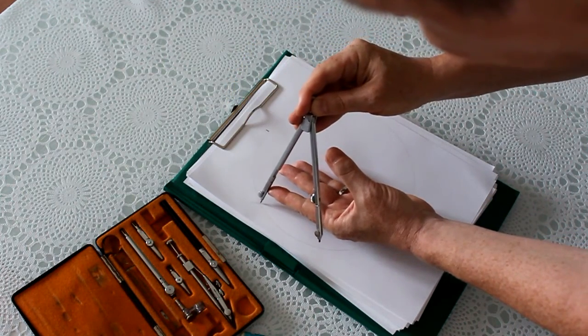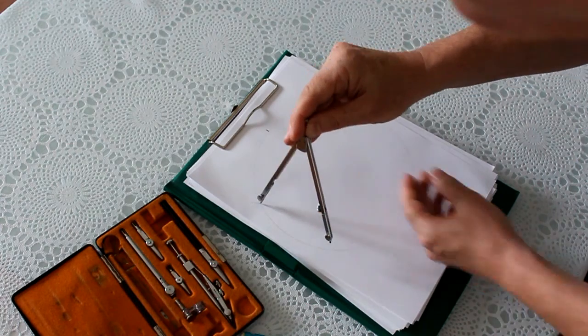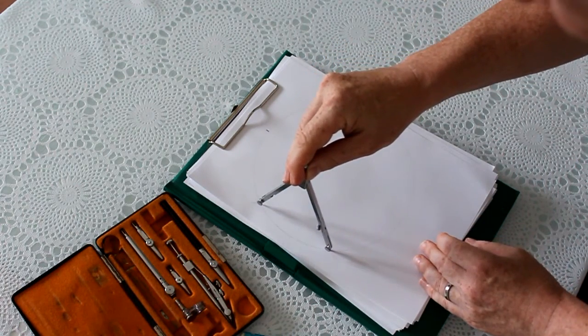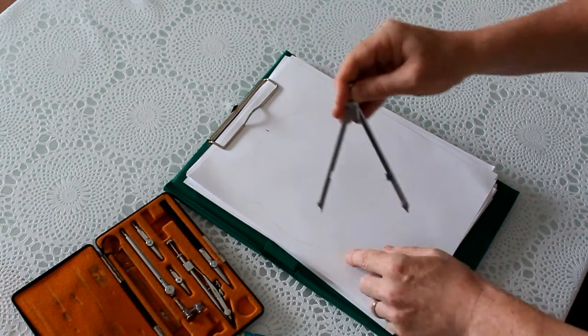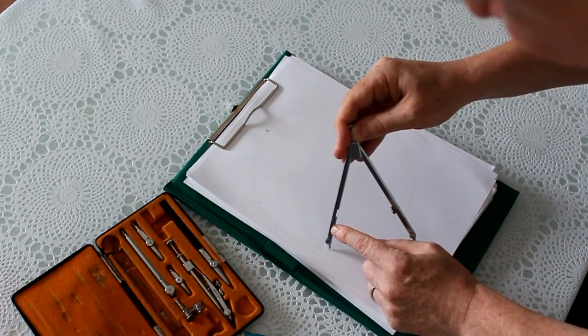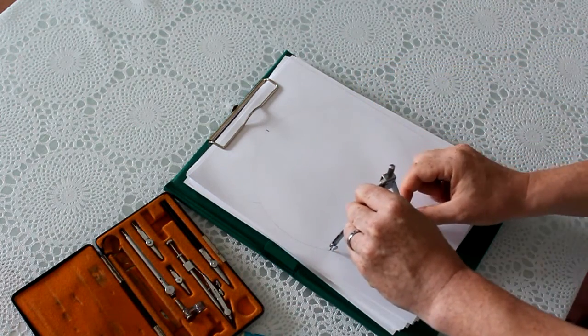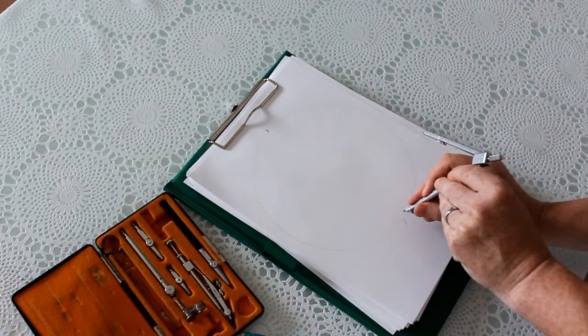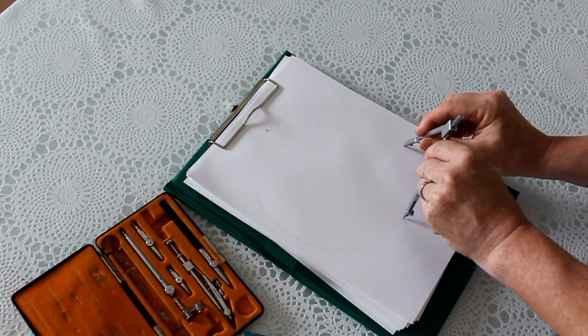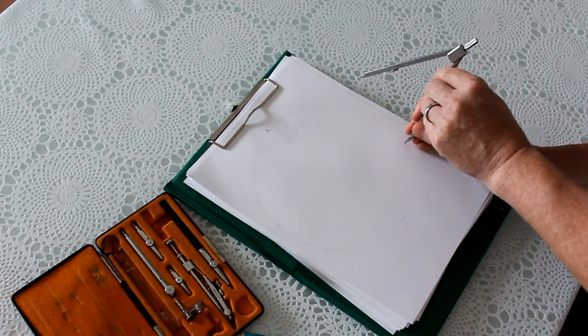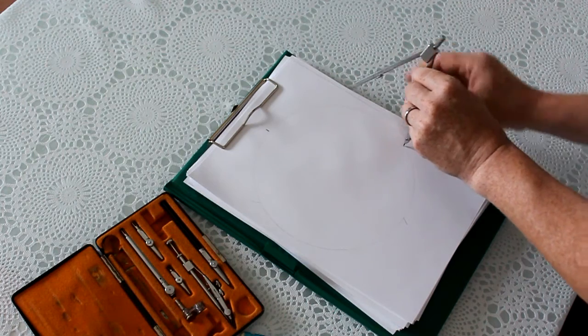Then we're going to move the point to the marker that we've just drawn and draw a second marker here. And then move again and draw another marker here, and here, and so we're going all around the circle like this.